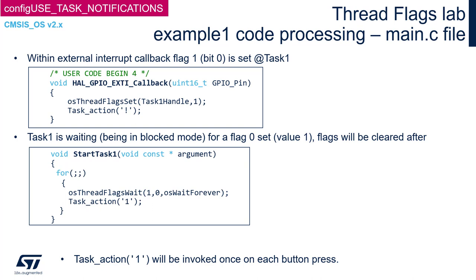The next point in our implementation is the StartTask1 function body. Within its endless loop, we will wait for flag mask 1 — only bit 0 set — with the option to clear the flags after, and waiting forever as a timeout. For this, we will use the osThreadFlagsWait function.